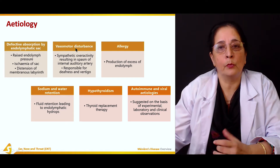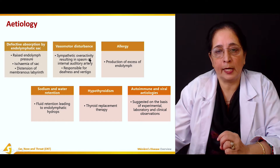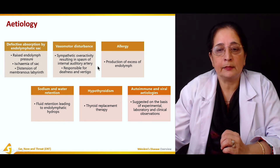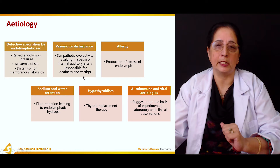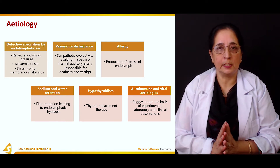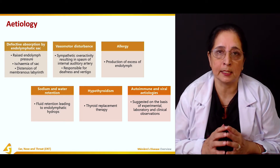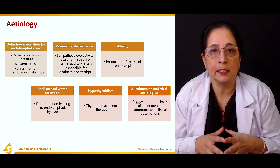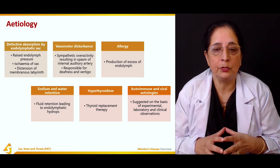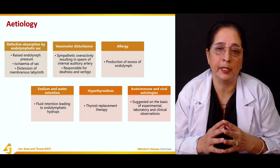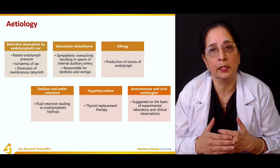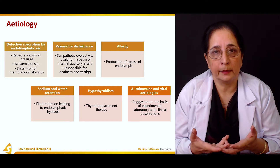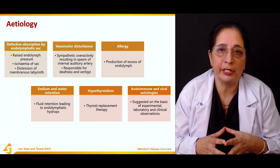Another cause is vasomotor disturbance — sympathetic overactivity resulting in spasm of the internal auditory artery. This spasm is responsible for deafness and vertigo. Disturbance in the sympathetic nervous system leads to spasm of the internal auditory artery, which is responsible for ischemia, defective absorption, deafness, and vertigo.